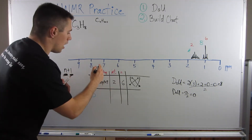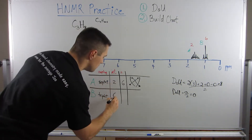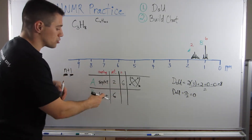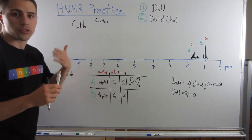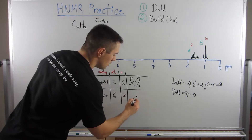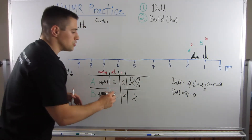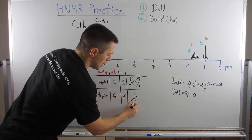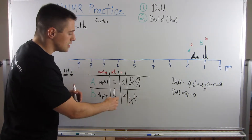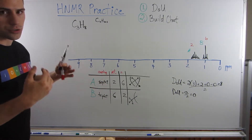Peak B has a triplet coupling — one, two, three peaks. Its integration is six, so this is definitely more than one position. For a triplet, n+1 = 3, so n = 2 neighbors. This is a common pattern: a triplet at around chemical shift one is usually a terminal methyl group. Since the integration is six, we probably have two terminal CH3 groups on each end.